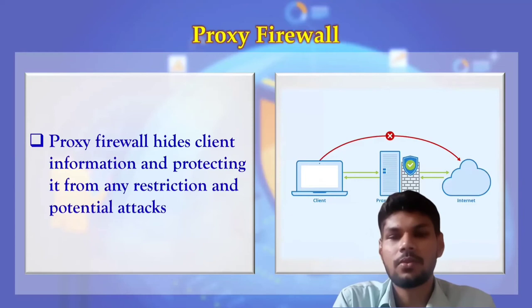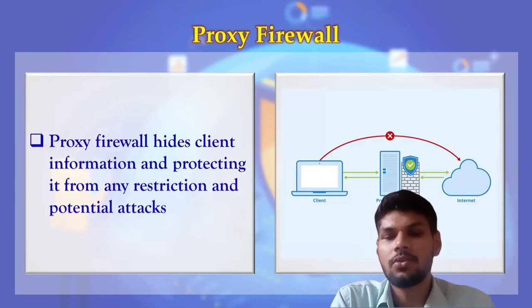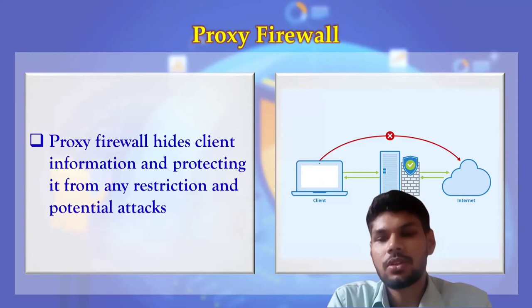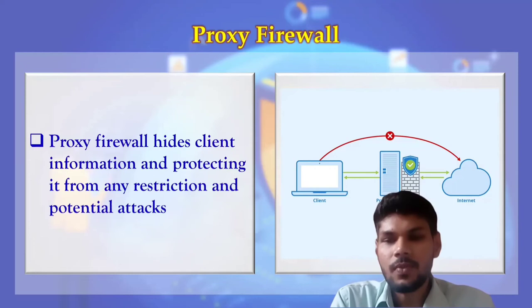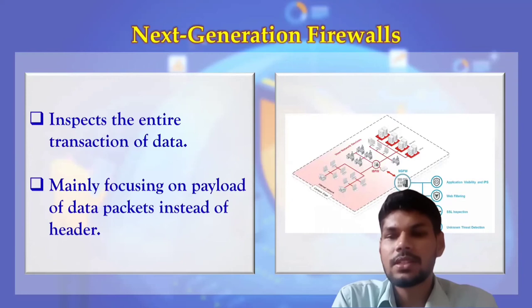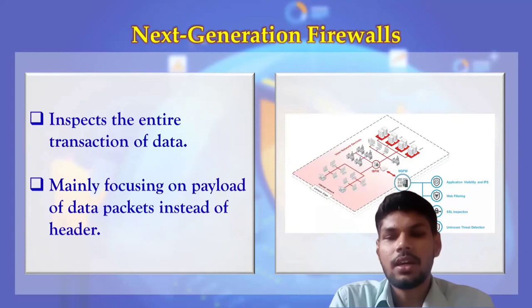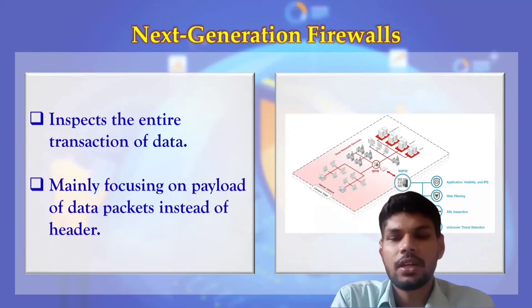Proxy firewalls work at the application layer. They hide client identification and protect from attacks by forwarding client requests as their own requests using the proxy's IP address, so hackers can't identify the user. Proxy firewalls also maintain a cache memory — if requested information is already cached, it is sent directly without going to the internet. Next-generation firewalls mainly focus on the payload — the actual data — and combine functions of other firewalls including packet filtering and stateful inspection, protecting from malware attacks and external threats.